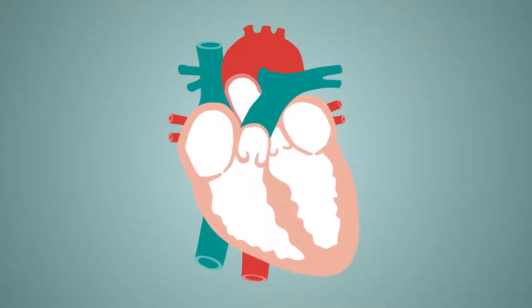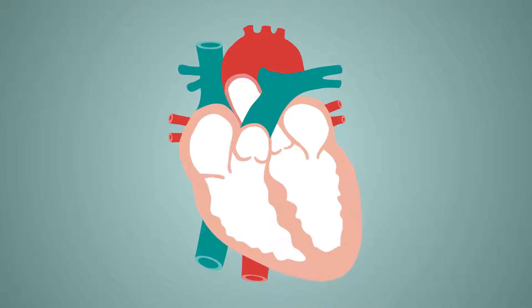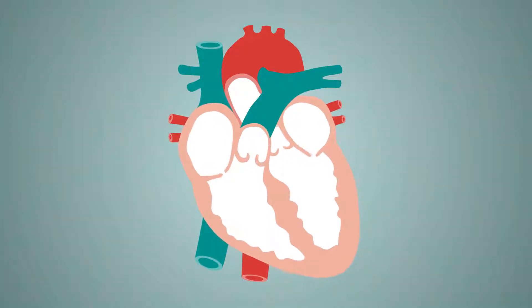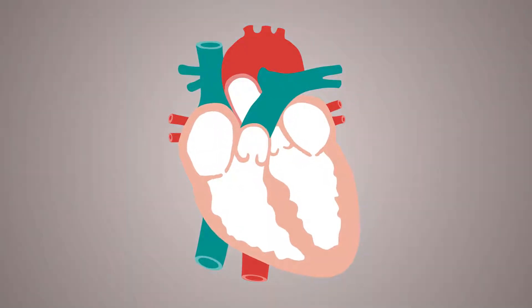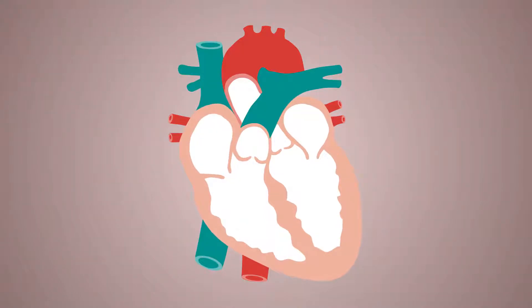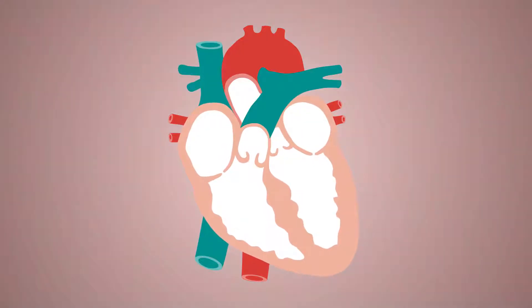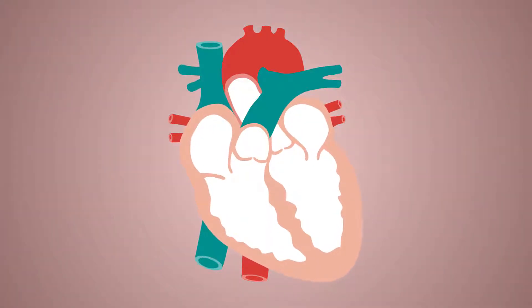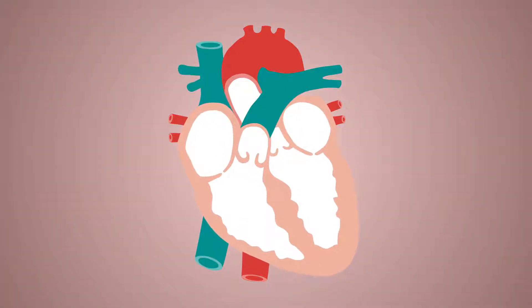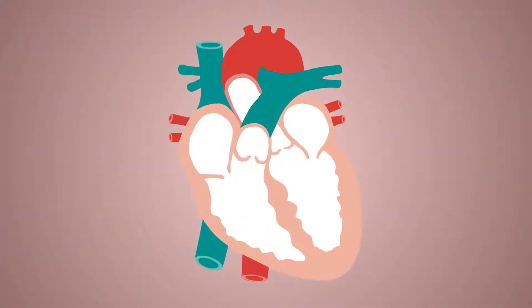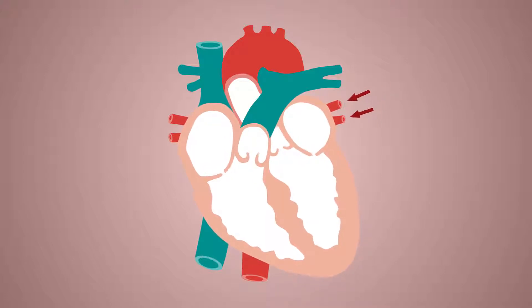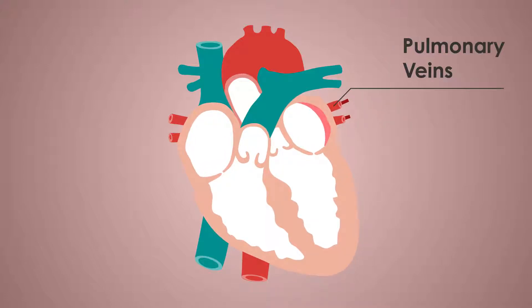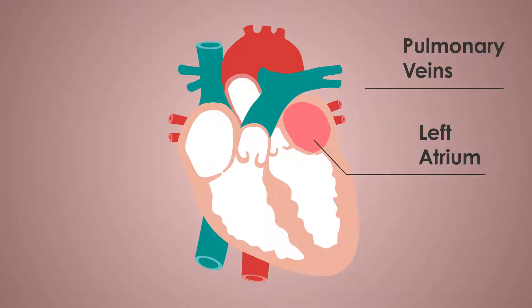Within the lungs, a gaseous exchange occurs, making the blood rich with oxygen whilst depositing carbon dioxide for excretion via respiration. The now oxygenated blood flows back from the lungs to the heart via the pulmonary veins and into the left atrium.